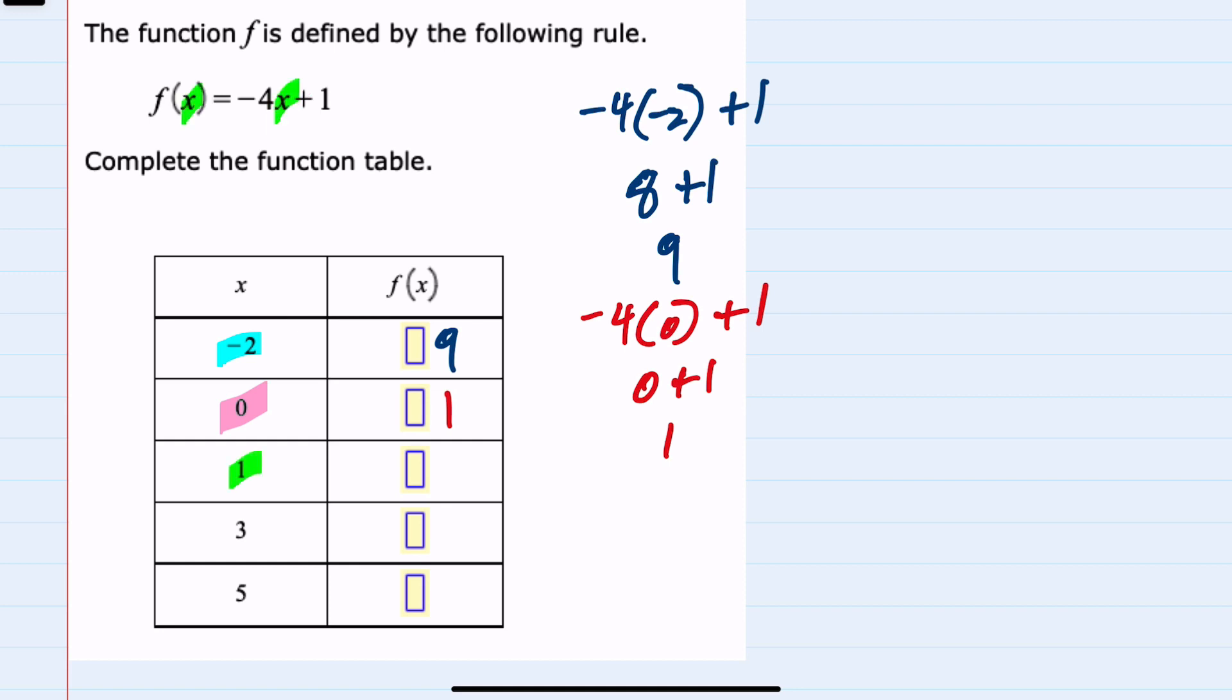f(1) means replacing x with 1. So -4 times 1 plus 1. -4 times 1 is -4, plus 1 is -3.